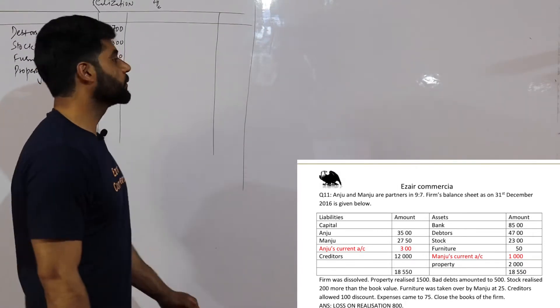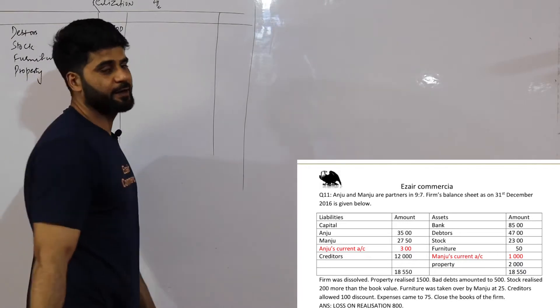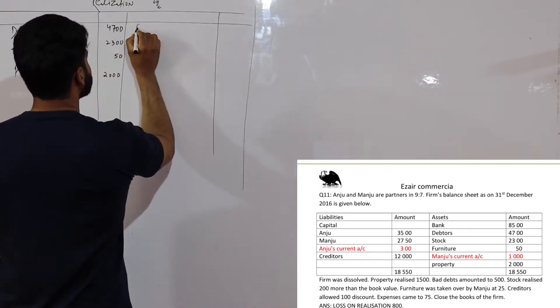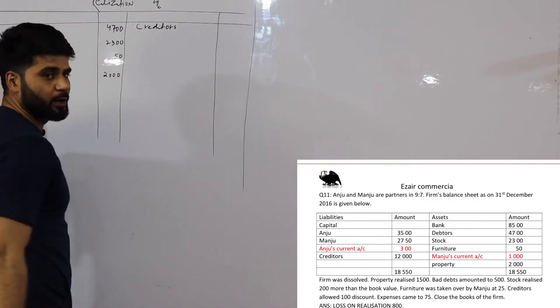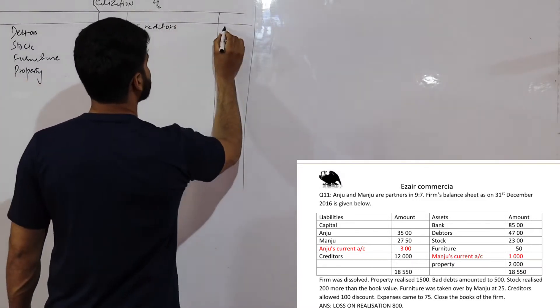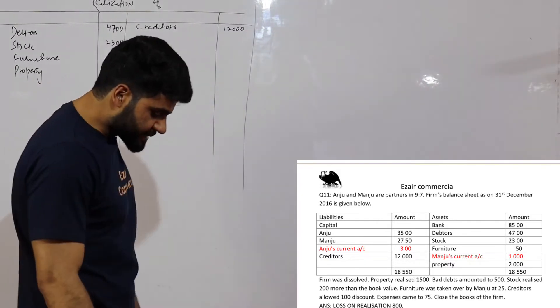Now the second point is all liabilities are credited. Who is liability? In the question there will be liability - creditors. How much is that? 12,000 dollars. Now the third step is my dear.